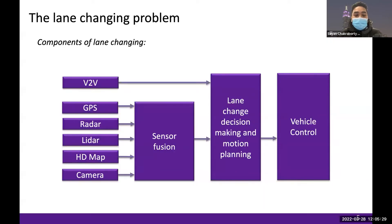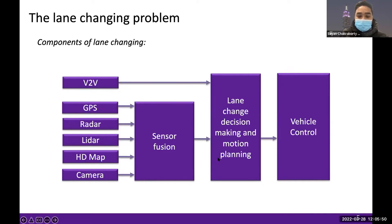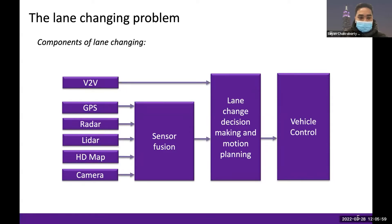The components involved in lane changing include vehicle-to-vehicle communication, and sensors such as GPS, radar, LIDAR, HD map, and camera. Data is collected by the sensors and transferred to the lane change engine decision making module and motion planning module. After trajectories are planned, they are transferred to the vehicle control module, which is responsible for vehicle control.